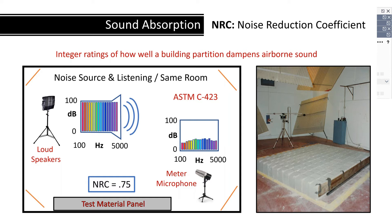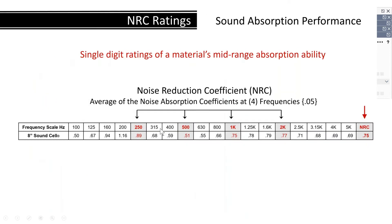A frequency response microphone within the room records the decibel level reduction at 18 frequencies from 100 hertz to 5,000. An absorption coefficient for each frequency is then calculated by dividing the change in room absorption by the area of the test panel. Some of the mid-range frequencies are averaged, and the material is assigned an NRC rating.